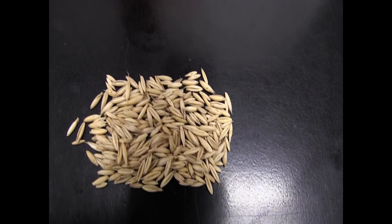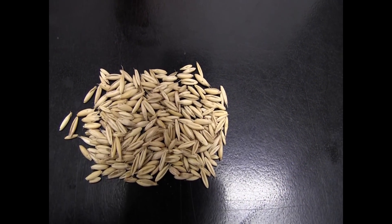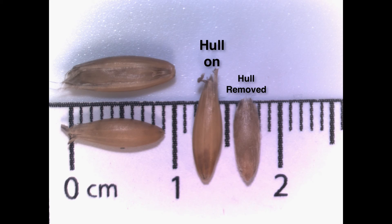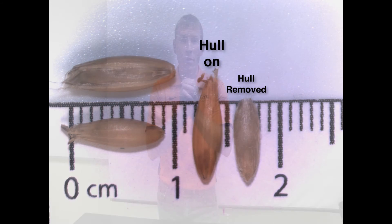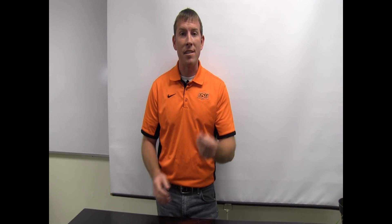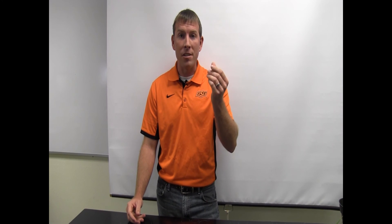One final thing to mention about our seeds is comparing those which have the hull versus those that do not. Our barley and oat samples have the hull still attached to the seed. The hull is the protective covering of the seed while it was growing in the field that was not threshed off during harvest. Versus our triticale, rye, and wheat — the hull was removed during the harvesting process, and that's the chaff or trash we see out in the field while harvesting those different small grains.